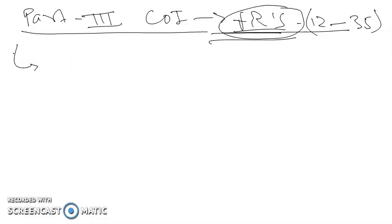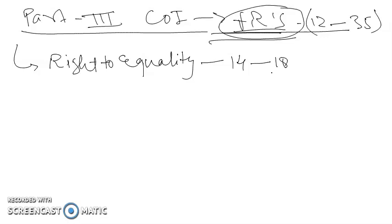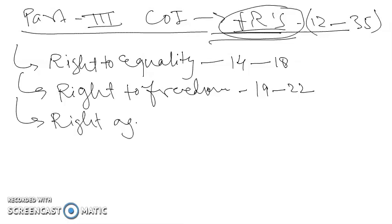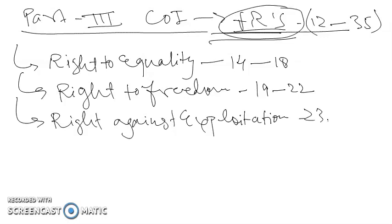The first set is the right to equality, from Article 14 to Article 18. The second set is the right to freedom, from Article 19 to Article 22. The third set is the right against exploitation, under Articles 23 and 24.